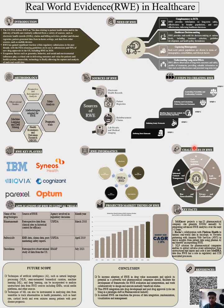Of course there has to be a section on drawbacks or challenges — every topic has certain challenges. Then there is a section on key facts: any important features, peculiarities, or characteristics of that particular topic should be highlighted here.